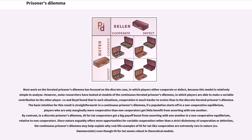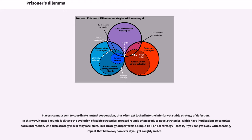The basic intuition for this result is straightforward. In a continuous prisoner's dilemma, if a population starts off in a non-cooperative equilibrium, players who are only marginally more cooperative than non-cooperators get little benefit from assorting with one another. By contrast, in a discrete prisoner's dilemma, tit-for-tat cooperators get a big payoff boost from assorting with one another in a non-cooperative equilibrium, relative to non-cooperators. Since nature arguably offers more opportunities for variable cooperation rather than a strict dichotomy of cooperation or defection, the continuous prisoner's dilemma may help explain why real-life examples of tit-for-tat-like cooperation are extremely rare in nature even though tit-for-tat seems robust in theoretical models.